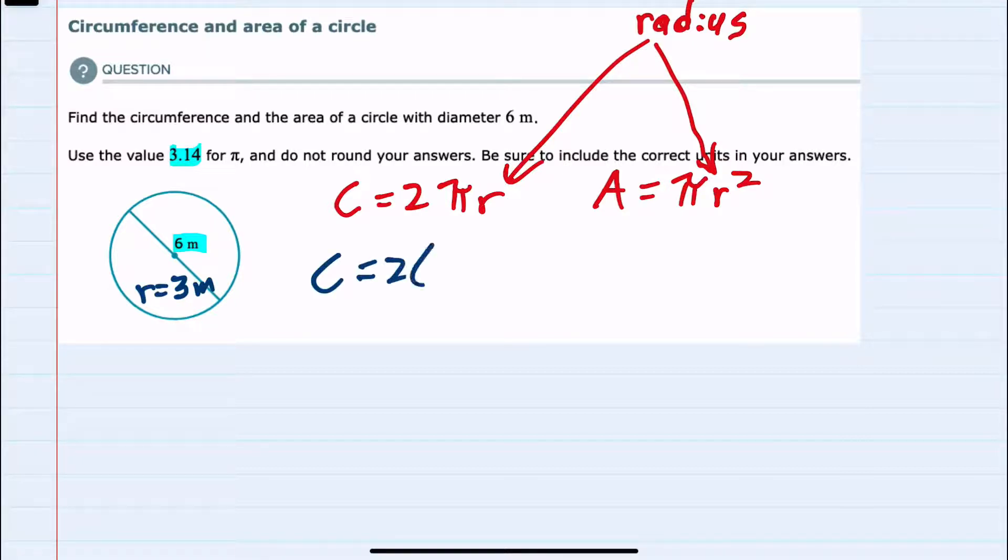We see that 2 times π, which is 3.14, times the radius, which we've determined to be 3 meters. We can multiply 2 times 3.14 to get 6.28.